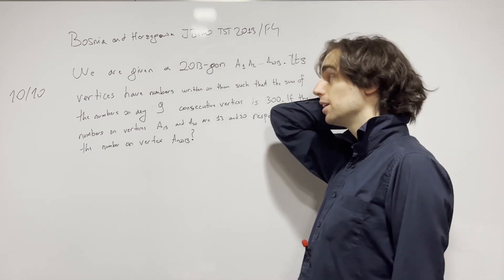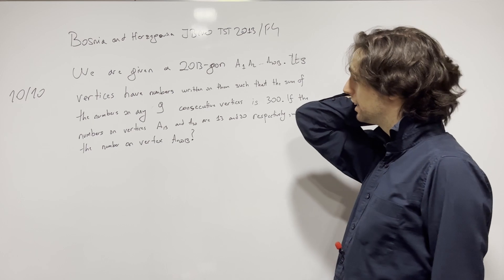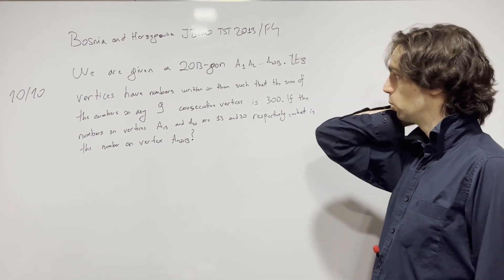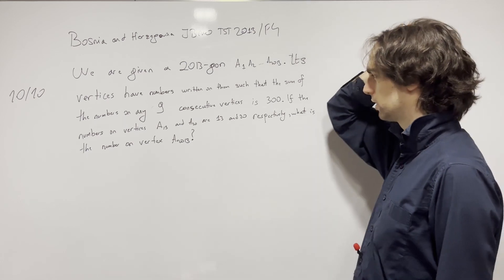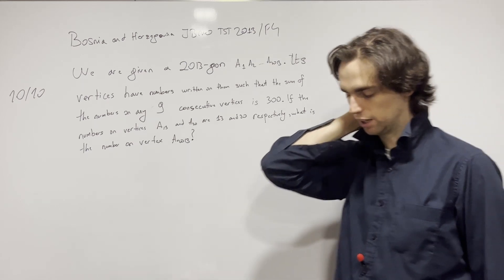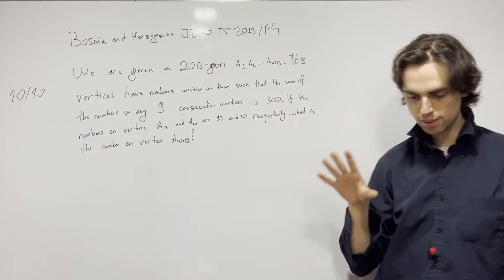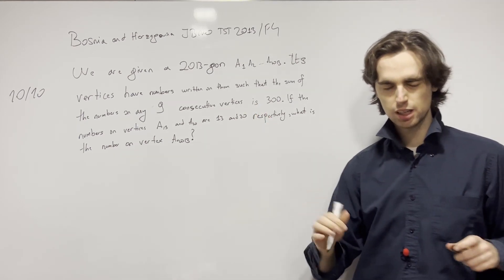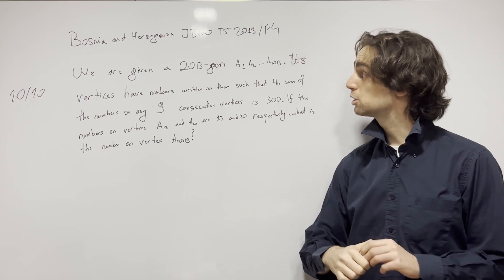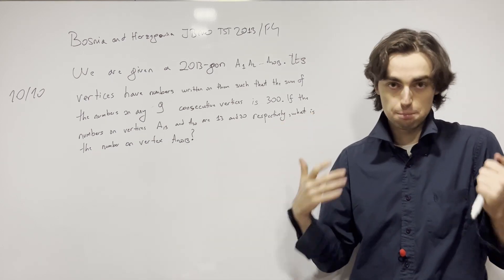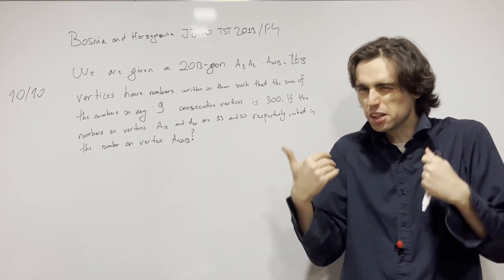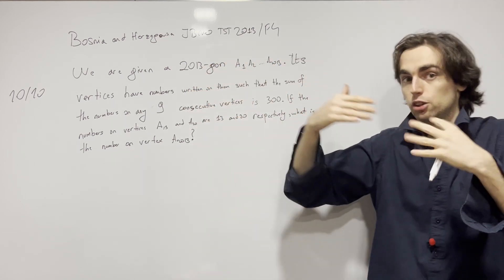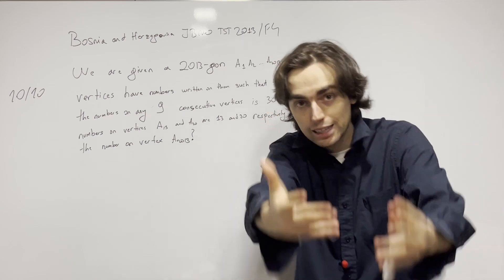So now without further ado, let's begin. We have a 2013-gon, and its vertices have numbers written on them such that the sum of any nine consecutive vertices is 300. Let's first see how we're going to use this fact and how we translate this problem into something we can deal with mathematically. I invite you to pause for five minutes and think about how we translate these words into math.